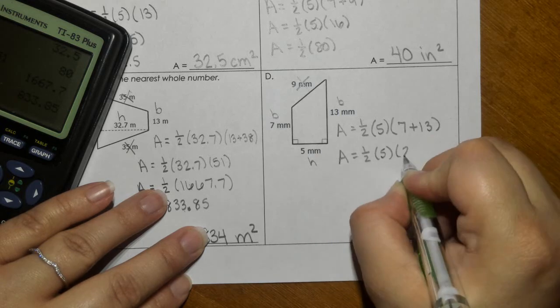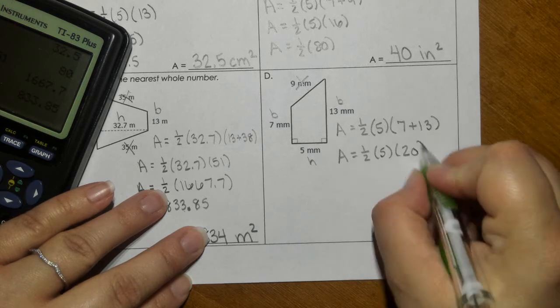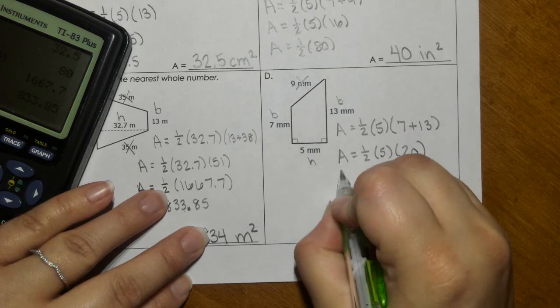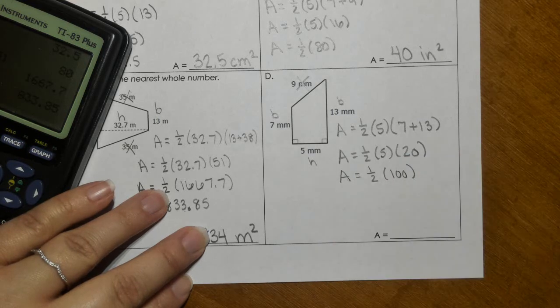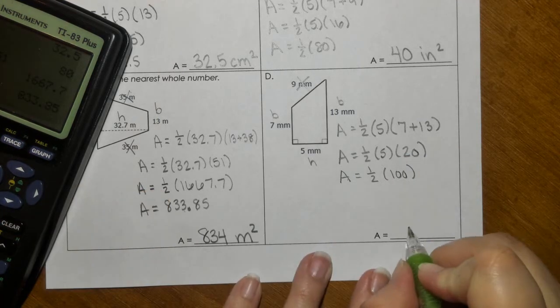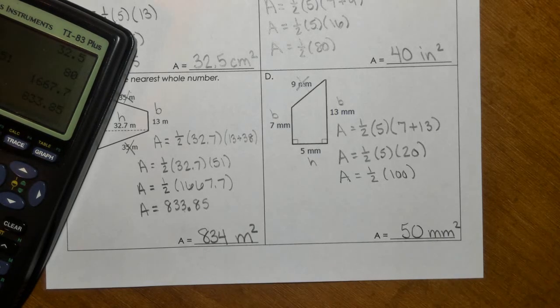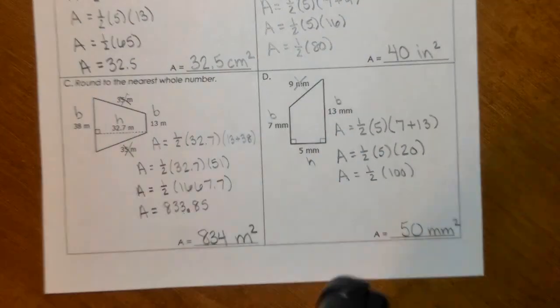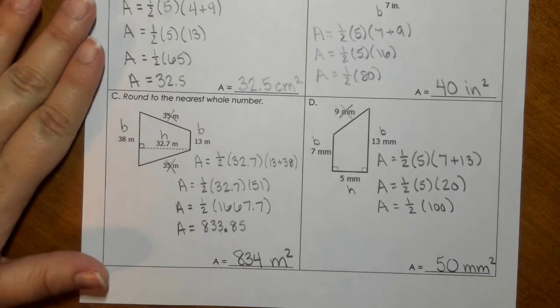So that would make 20, and then if I multiply 5 and 20, that gives us 100. And if we take half of 100, we would get 50 millimeters squared. Hopefully today was a simple day.